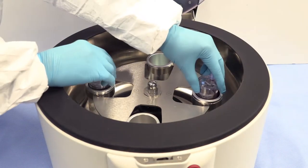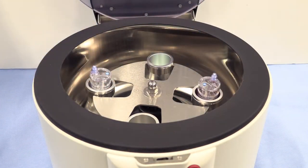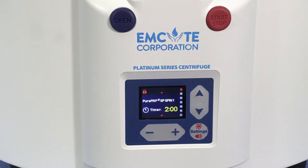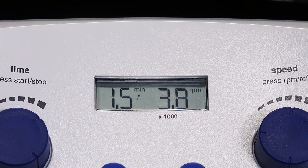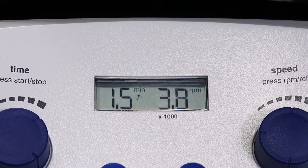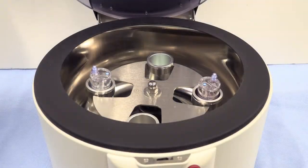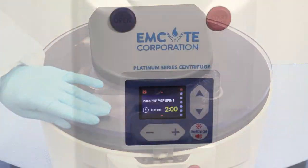Place both devices in the centrifuge rotor at opposite ends. Set the Platinum Series centrifuge at Pure PRP SP SPIN 1, or set the Executive Series centrifuge at 1.5 minutes at 3800 RPMs. Close the centrifuge lid and press Start.